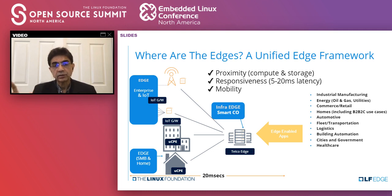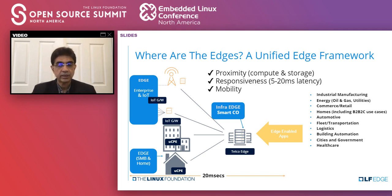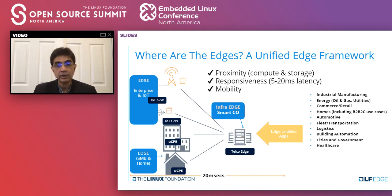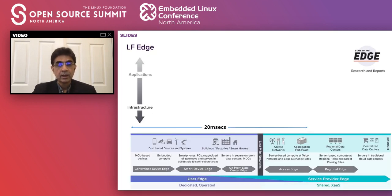Each of these verticals — industrial manufacturing, oil and gas, commerce, homes, automotive fleet, building automation, smart cities, healthcare — are prime candidates for taking advantage of the edge computing explosion. Keep in mind, edge from a market size perspective is four times that of cloud computing. So I always joke: if you missed the cloud revolution, don't worry — edge is four times bigger.